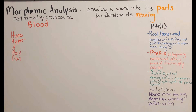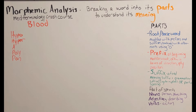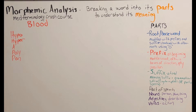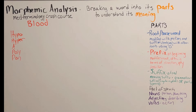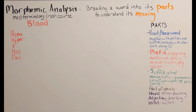Starting with prefixes — some of these you probably already know, so I'm going to pause before I give you the definition because I want you to think of it. Hypo means low or deficient, meaning not having enough. The opposite of hypo is hyper, which means high or excessive.